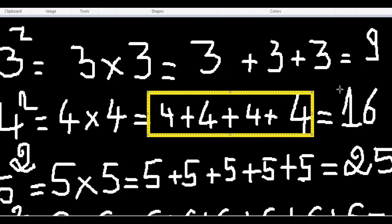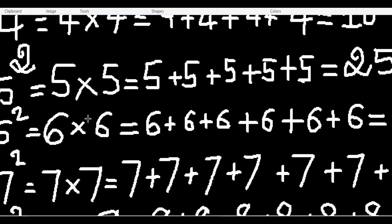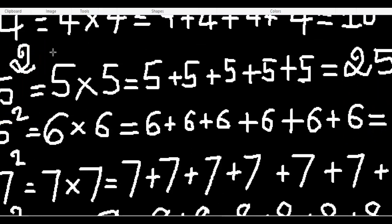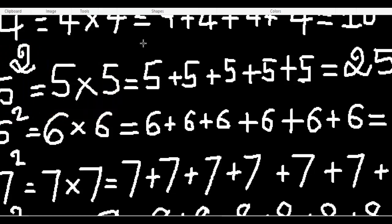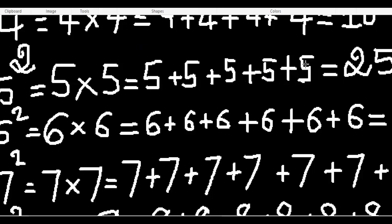Now five squared. Five times five means five plus five plus five plus five plus five — five added five times — and that equals 25.